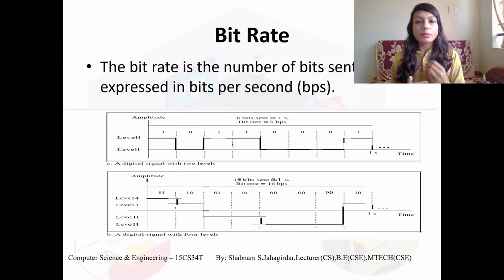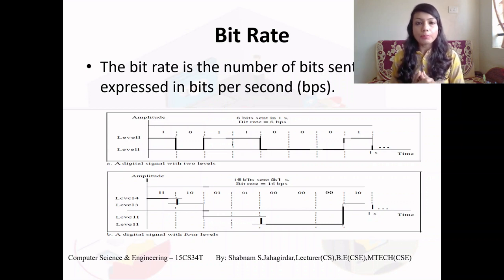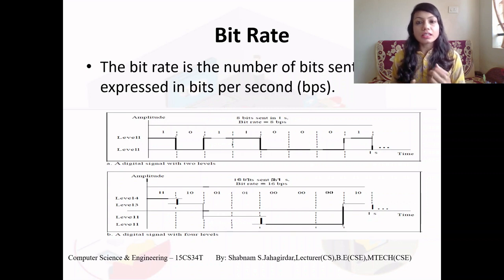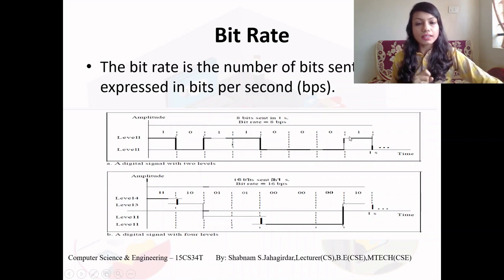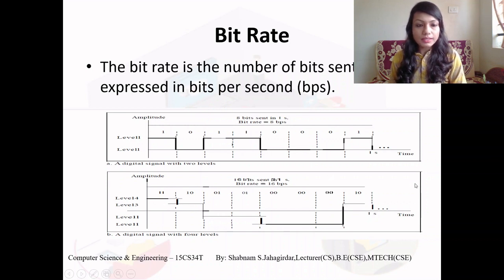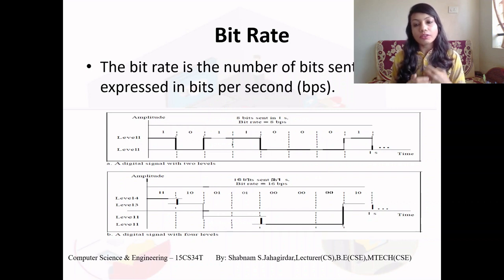Bit rate is the number of bits sent in one second, expressed in bits per second. For analog signal characteristics we had peak amplitude, period, and phase; for digital signals we calculate using bit rate. In the example, the first signal sends 8 bits per second, while the second with four levels sends 16 bits per second, since two bits are sent at each level.